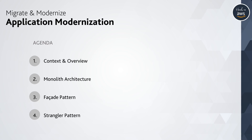A quick glance at what we will cover today. We will talk about application modernization in the context of the cloud migration journey, then go over a simple example of a monolithic application architecture. We will talk about a couple of common modernization patterns — the facade pattern and the strangler pattern — that help you arrive at a modern architecture in steps.